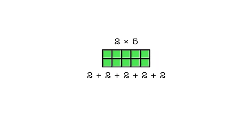This checkerboard arrangement of blocks is called an array. Notice that the array is 2 tall and 5 wide.